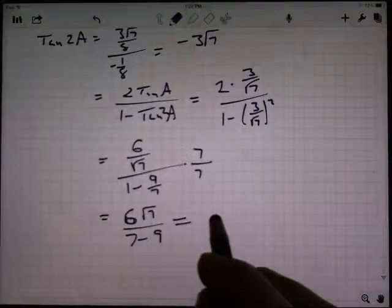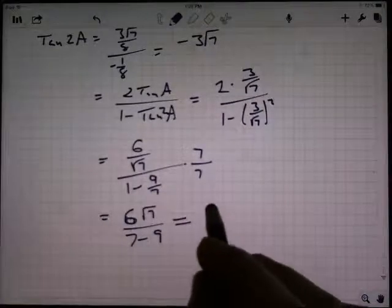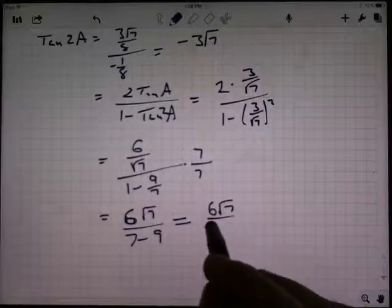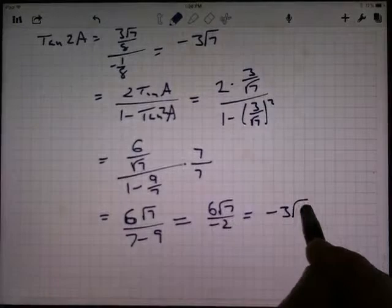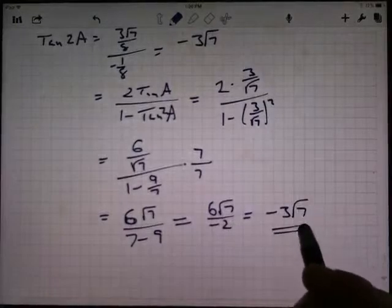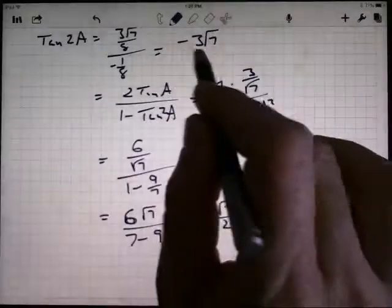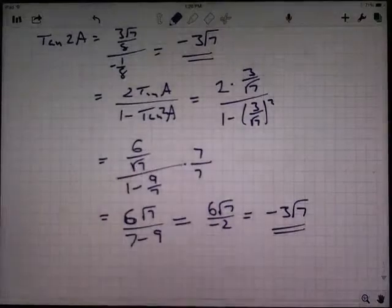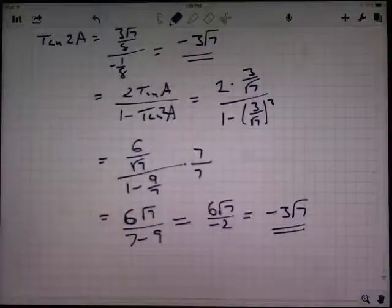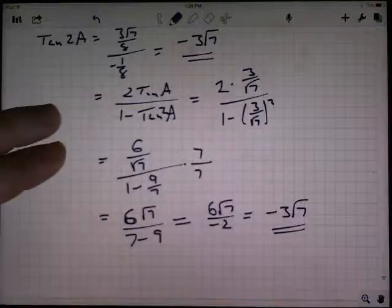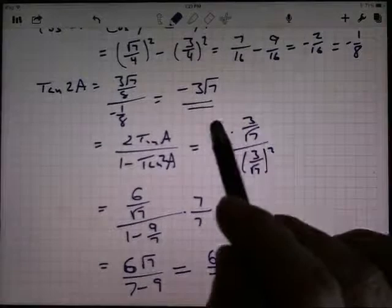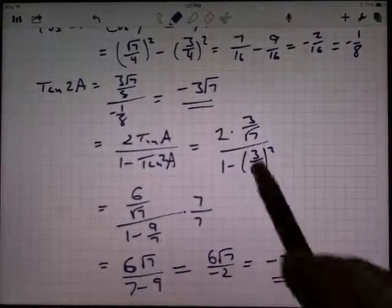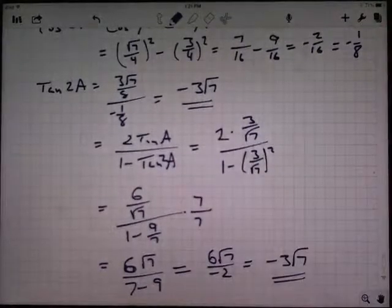And I get what? 6 radical 7 over negative 2, which is negative 3 radical 7. Is that what I got before? Oh, yeah. Negative 3 radical 7. Okay. Good. I should get the same answer both ways. I paused there for a little while because I was thinking I'm not going to get the same answer. Somehow I was trying to come up with this answer, but it's like, wait, that's the cosine. This is the answer that I need to come up with. So good. Tangent both ways.